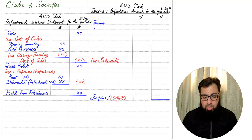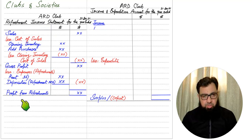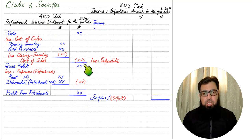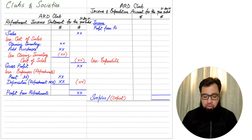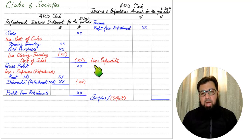The first item of income we are generating is from refreshment. We have already prepared the refreshment income statement, and the final answer from that will be carried forward to the income and expenditure account as 'profit from canteen' or 'profit from refreshment'. If there was a loss from refreshment, that loss would be written under the heading of expenditure.